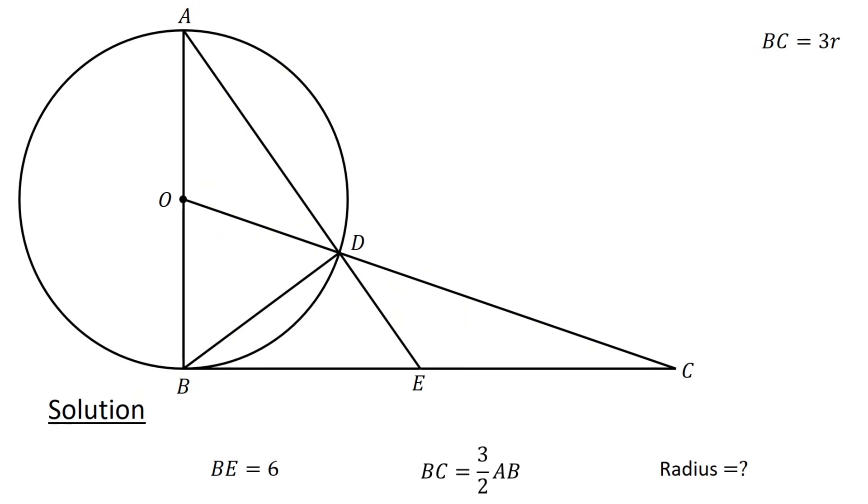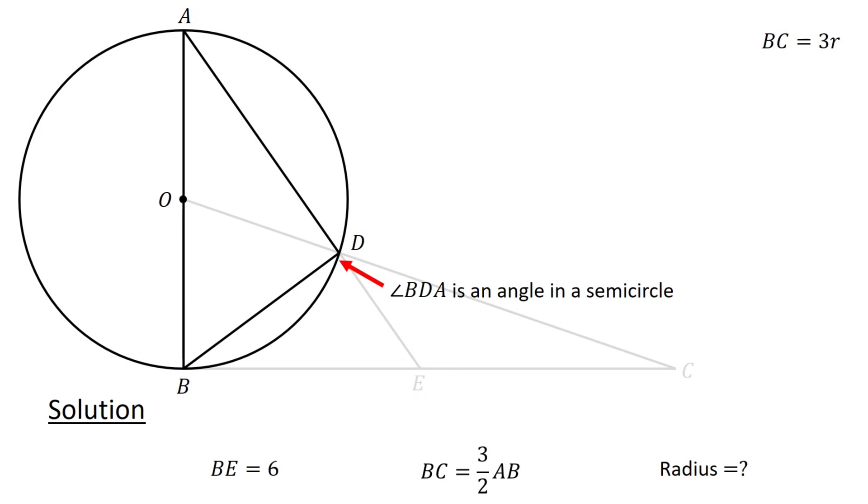Next, connect B to D and then consider triangle ABD and the circle. Angle BDA is an angle in a semicircle. Recall that an angle in a semicircle is a right angle. Therefore, angle BDA equals 90 degrees.